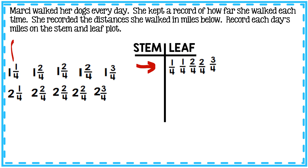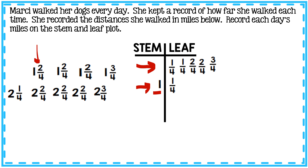Now let's look at the next row. These days she walked one mile and then an additional fraction. We'll put these on the next row of the stem and leaf plot. The whole number — the stem — goes on the stem side, and that is a one. Then my leaves follow after the stem in the same row. On one day she walked one and one-fourth miles.